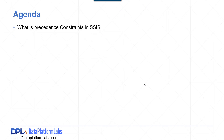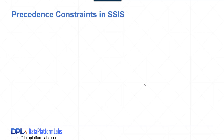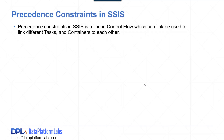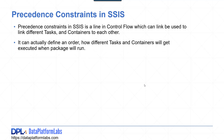The agenda of today's video tutorial is: what are precedence constraints in SSIS? Precedence constraints in SSIS is a line in control flow which can link different tasks and containers to each other. It can define an order for how different tasks and containers will be executed when the package runs.